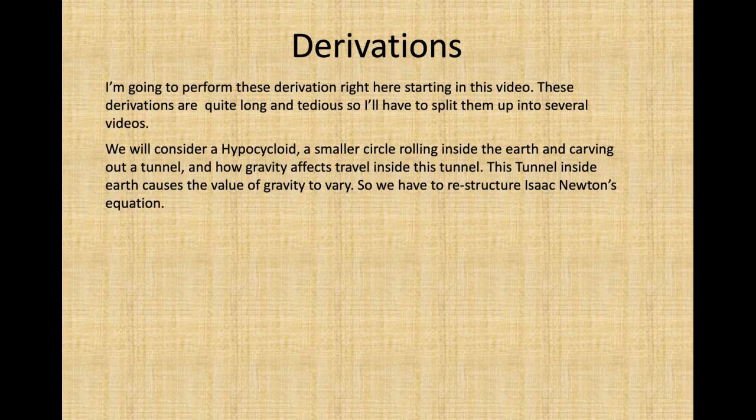As stated previously, we will consider a hypocycloid, a smaller circle rolling inside the radius inside the Earth and carving out a tunnel, and how gravity affects travel inside this tunnel. This tunnel inside the Earth causes the value of gravity to vary, so we have to restructure Isaac Newton's equation.